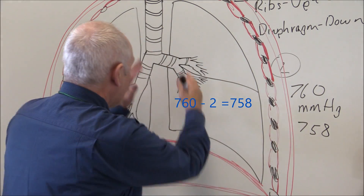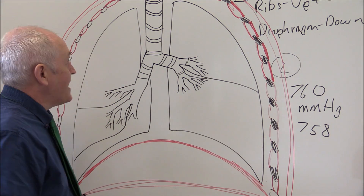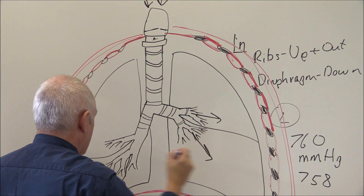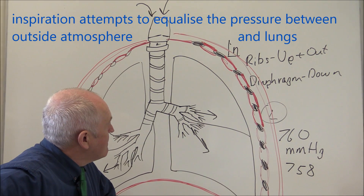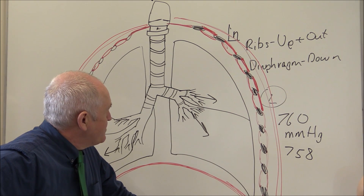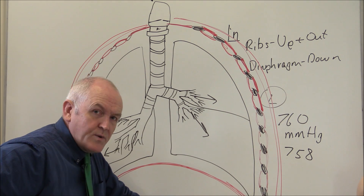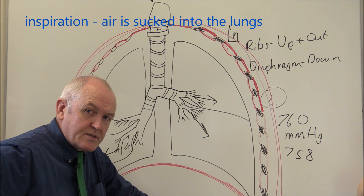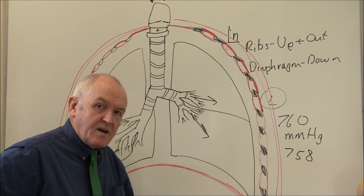The pressure inside the lungs is now less than the pressure in the external air, creating a pressure gradient. As a result, air comes into the airway and down the airways into the lungs to equalize the pressure. The movements of the thoracic wall and diaphragm increase volume, therefore decrease pressure, and air moves down the pressure gradient into the lungs. We are negative pressure ventilators — air is sucked into the lungs.